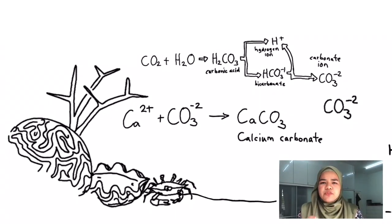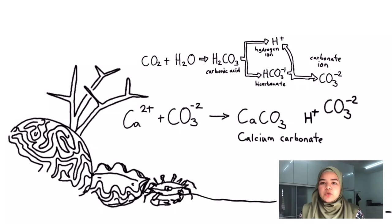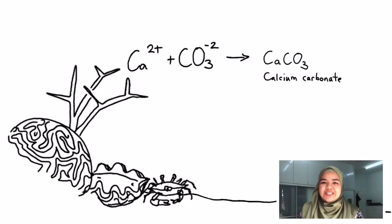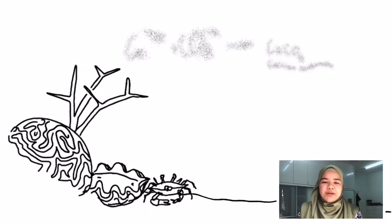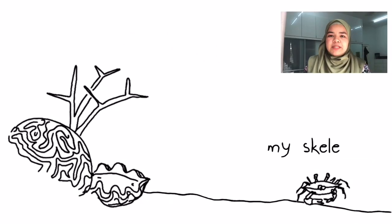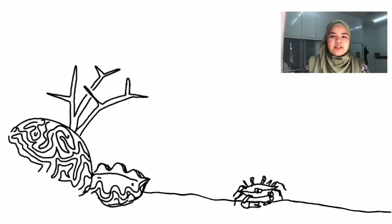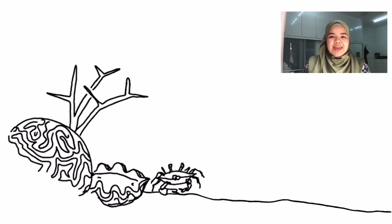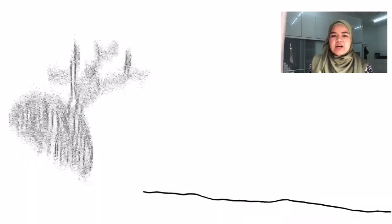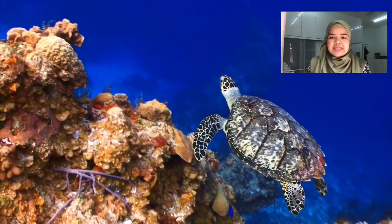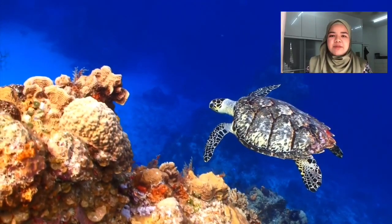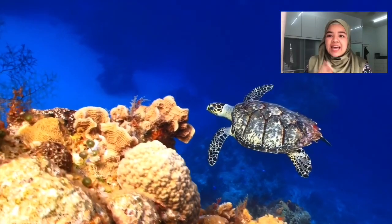Unfortunately, these free carbonate ions are also recombining with those very reactive hydrogen ions to make more bicarbonate. This reduces the available carbonate ions that organisms would otherwise be able to use. That means organisms with calcium carbonate skeletons are going to have trouble maintaining their skeletons, simply because they cannot get enough calcium carbonate to grow and repair their shells and skeletons.